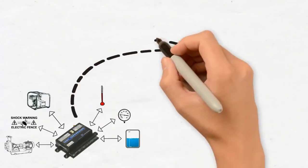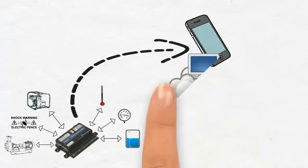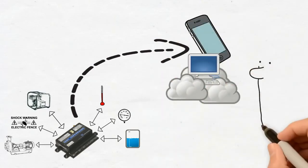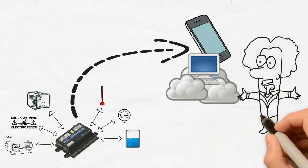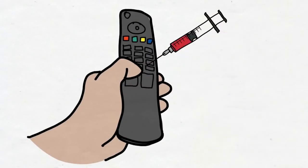The GSM Commander communicates from anywhere in the world, directly to your phone or to an internet server. This allows you to remotely monitor and control any installation from your phone or your browser. Think of it as a remote control on steroids.